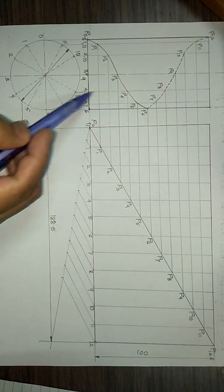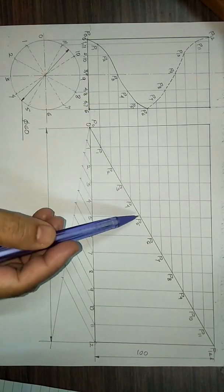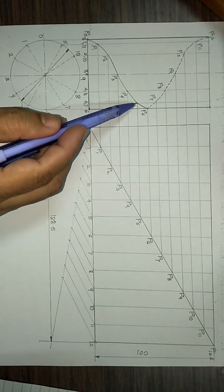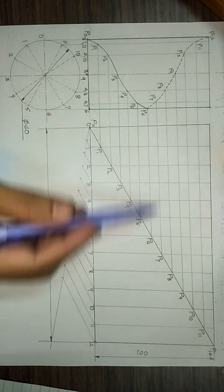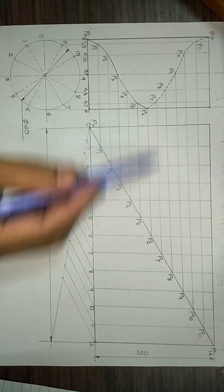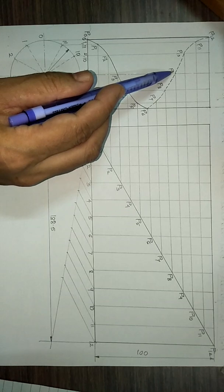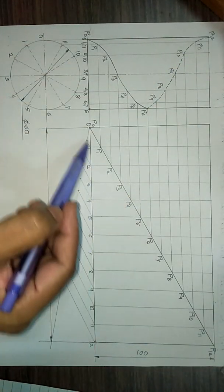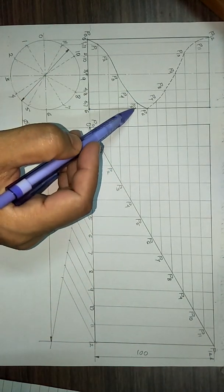Then p4 on the line for 4 and 8. Similarly p5, then p6 on this line, p7 on the line for 5 and 7. Then p8, p9, p10, p11 and p12. All these points which we have taken on the diagonal of the rectangle are transferred to the front view.